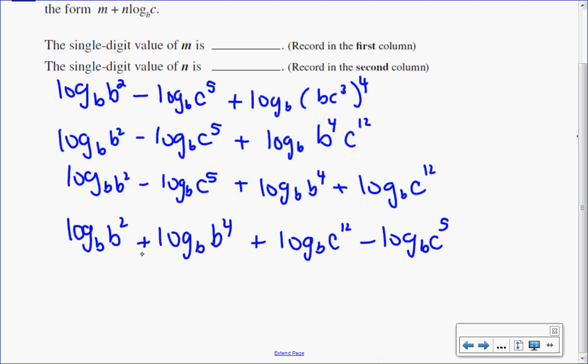So over here, I'm adding the logs together so I can keep the base the same and multiply the arguments together. So b squared times b exponent 4 is b to the 2 plus 4 is 6, plus here I'm subtracting my logs, so I can write it as one log, keeping the base the same.